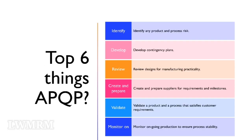Top six things APQP does: identify any product and process risk; develop contingency plans; review designs for manufacturing practicality; create and prepare suppliers for requirements and milestones; validate a product and a process that satisfies customer requirements; and monitor ongoing production to ensure process stability.